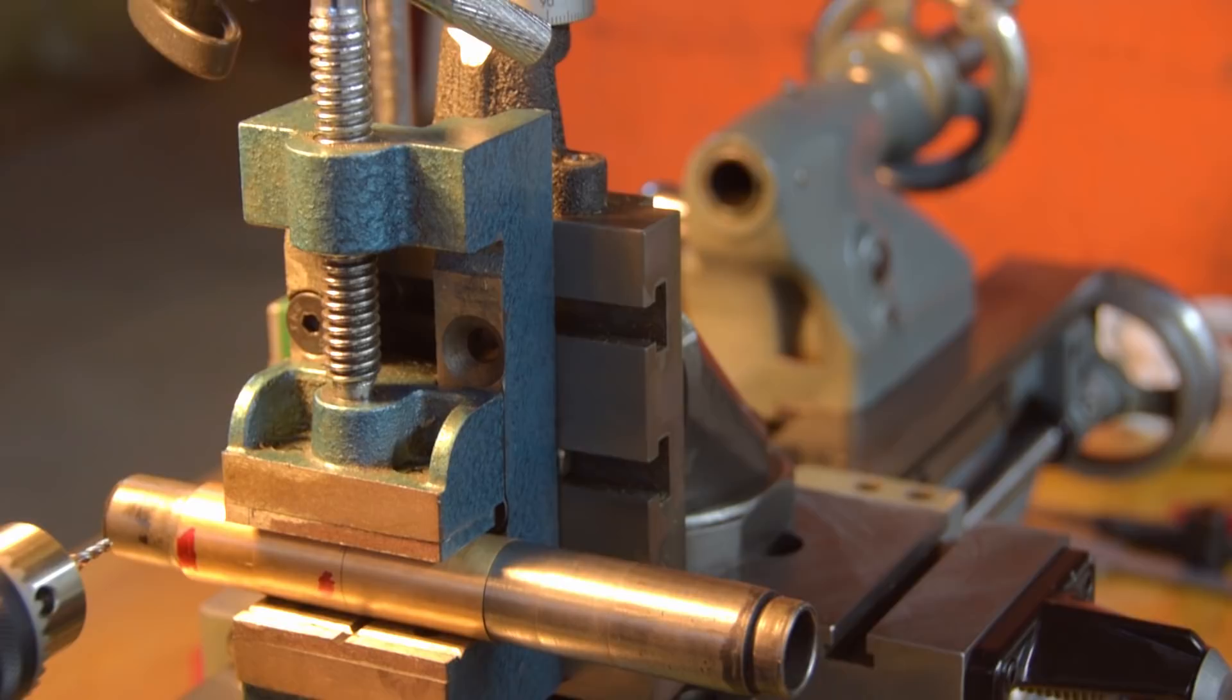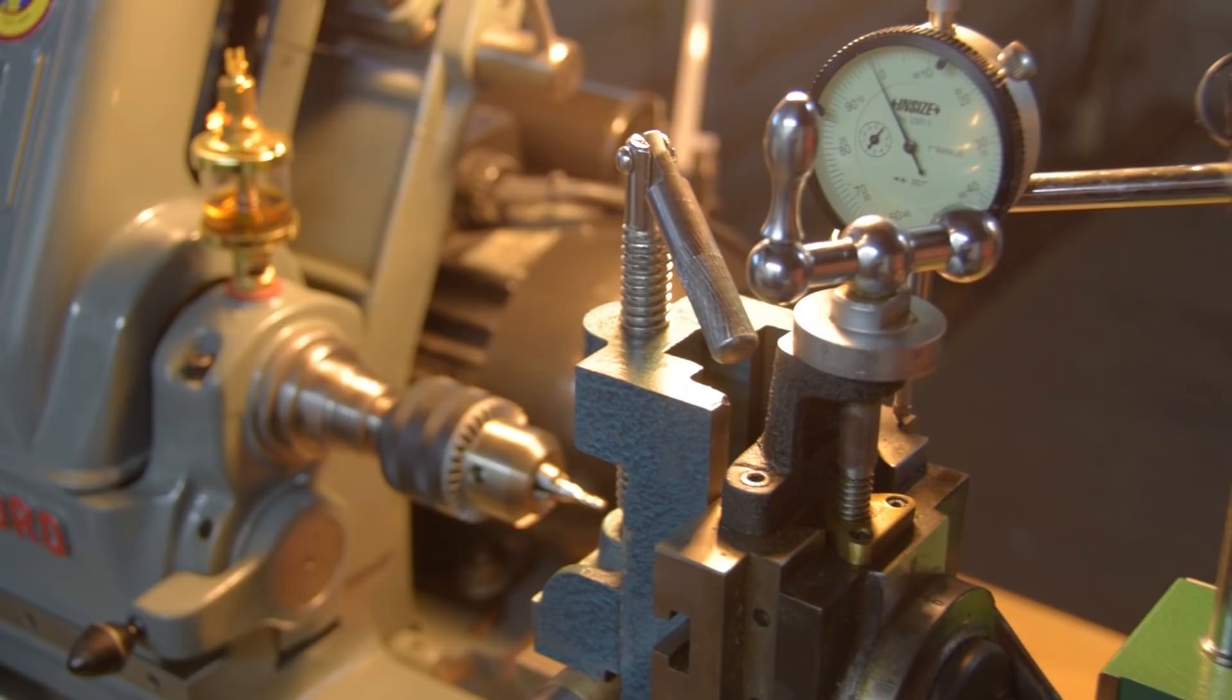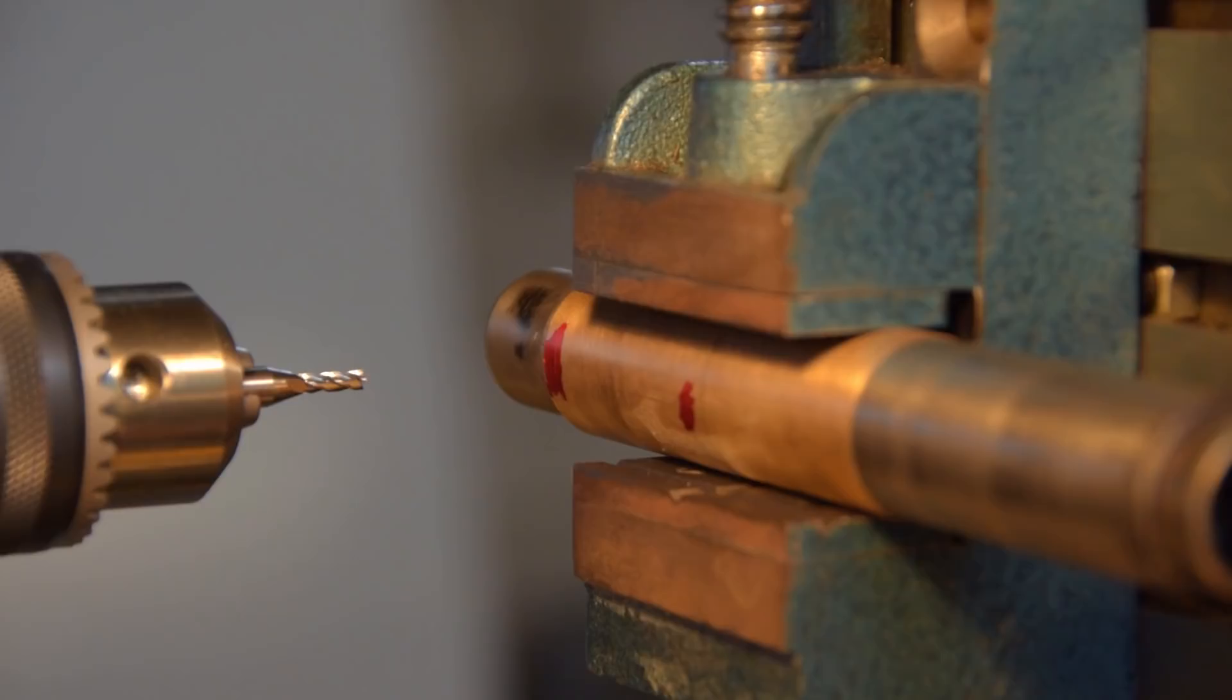Now let's get back to finishing off that sleeve. All we need to do is cut a slot for the key. I don't have a milling machine and most of you guys watching probably also don't have a milling machine, so we're going to do it on the lathe.